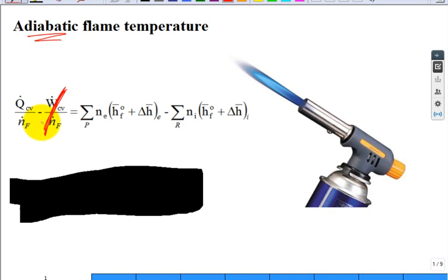If it's adiabatic, what is this term? Zero. And so all of the reactants, they're brought in at standard conditions. And the products are brought out at the high temperature. So this is the TH at the adiabatic flame temperature minus the molar enthalpy at the reference, 298.